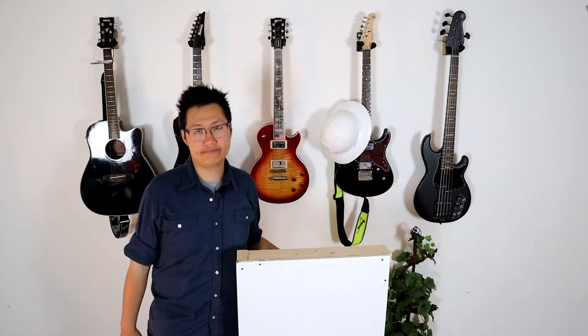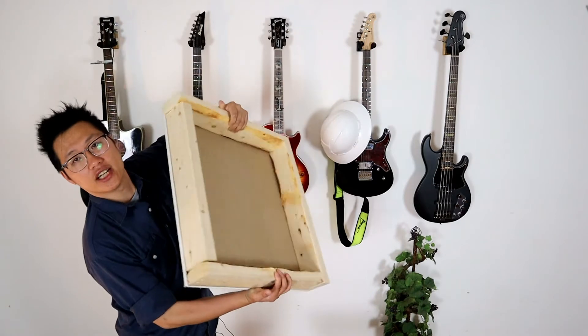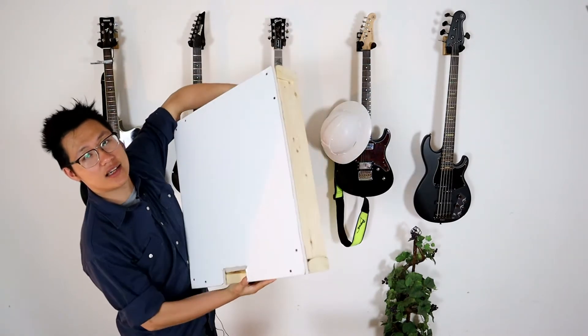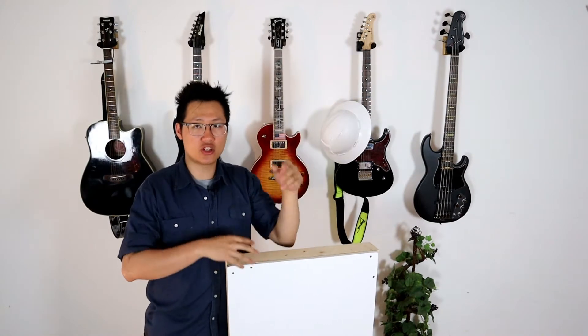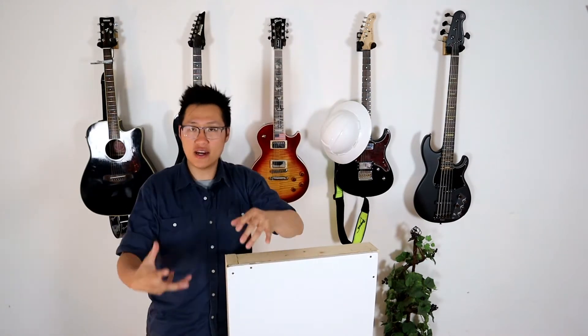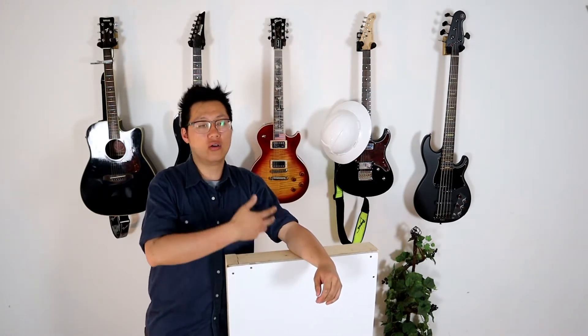Today what we're going to talk about is drywall anchors. I built this little jig here to kind of simulate a wall. A lot of my friends always ask me, 'Hey Joe, I want to install a little hanger on the wall here, maybe to hang clothes or maybe hang my guitars.'